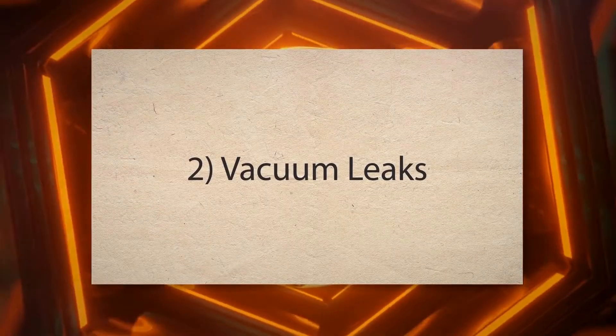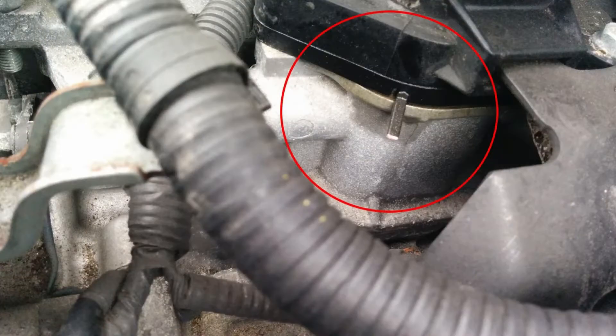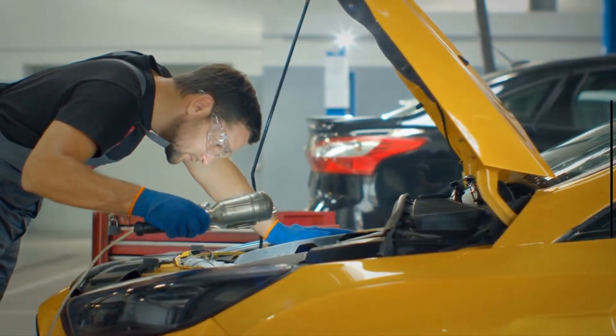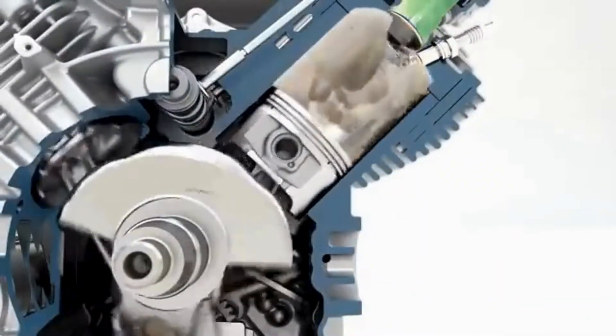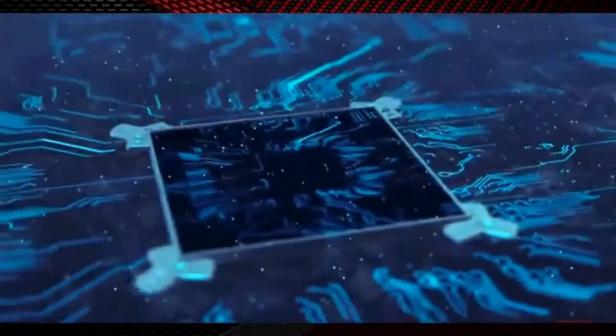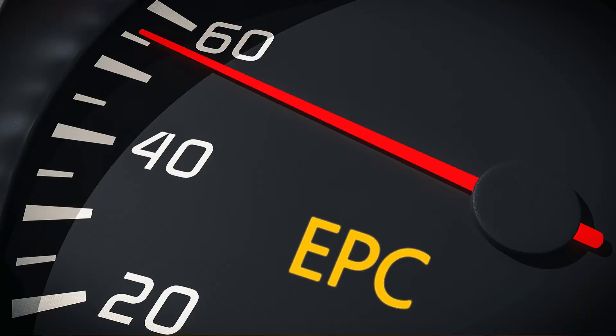Second, vacuum leaks. Leaks in the intake manifold or vacuum system allow unmetered air to enter the engine. This disrupts the air-fuel mixture, leading to performance issues. The engine control unit detects these irregularities and triggers the EPC light to indicate a problem with the engine's intake system.